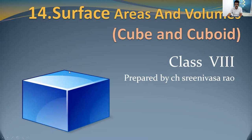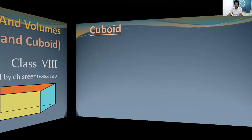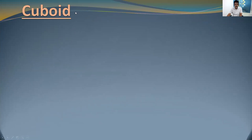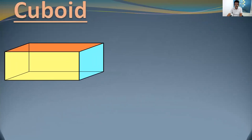Here you can see one cube and one cuboid. We are going to learn about cube and cuboid. First, let us see what is a cuboid. Can you observe, children? This is a diagram of a cuboid. I am going to explain about this three-dimensional object.